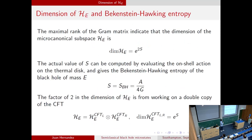The maximum rank of the Gram matrix is the dimension of the microcanonical subspace, and the value of S can be computed by evaluating the on-shell action on the thermal disk and doing an inverse Laplace transform. It basically gives the Bekenstein-Hawking entropy. The factor of two is just from the fact that we're working on a double copy of the CFT.